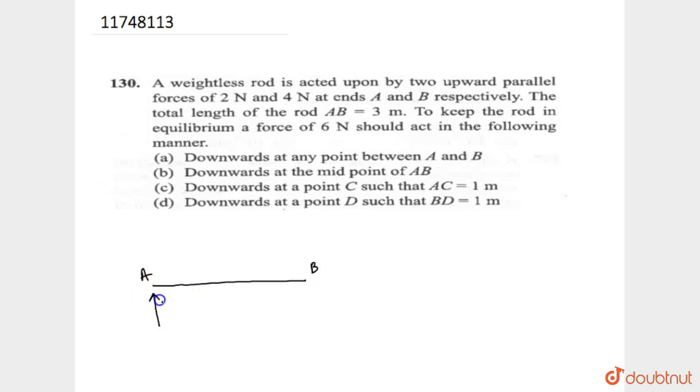In A, upward two newton forces, and in B, upward direction, four newton forces. The total length of the rod is three. A, B, total length is three.